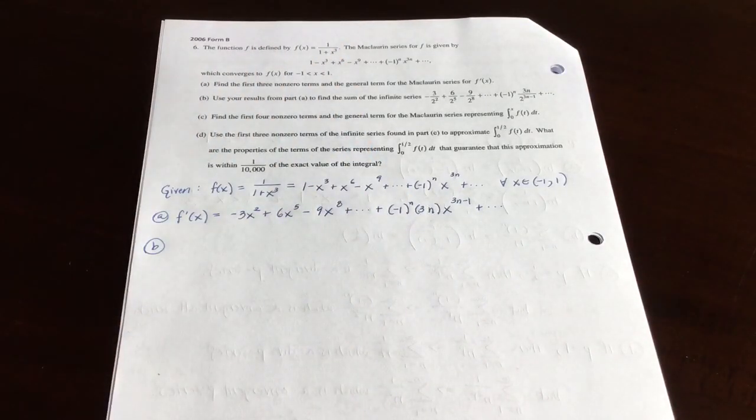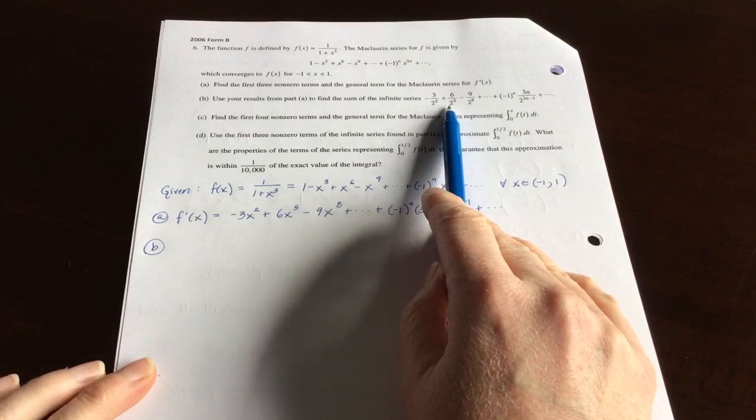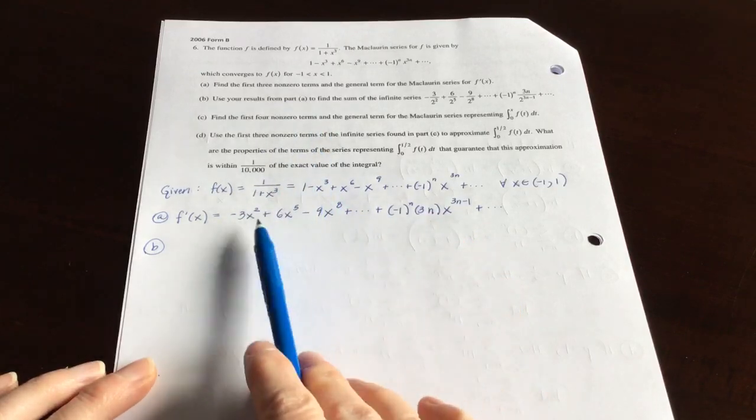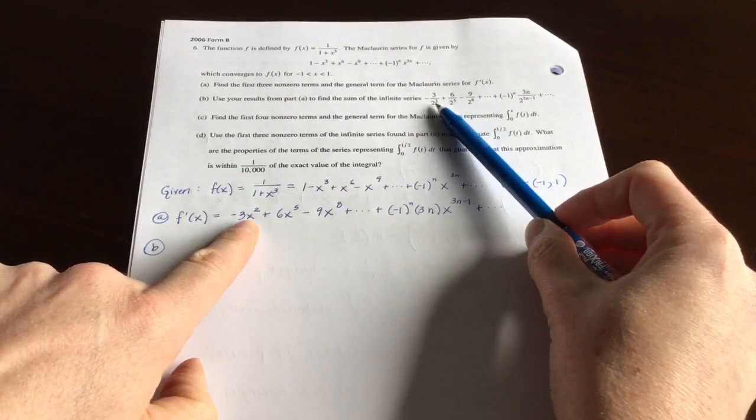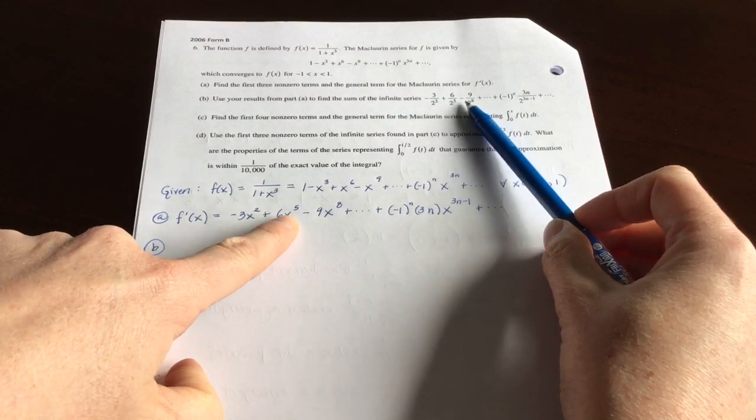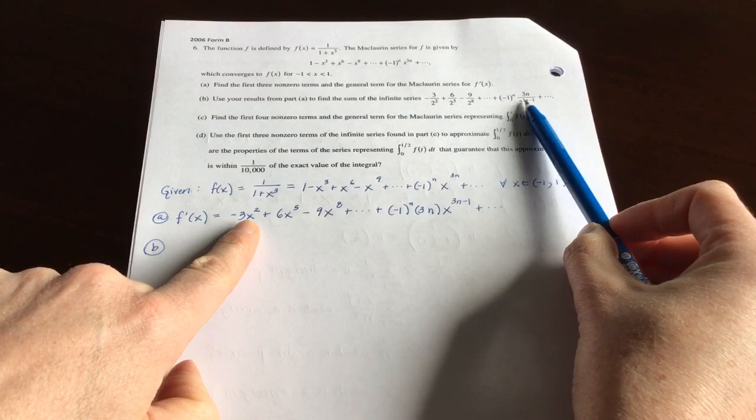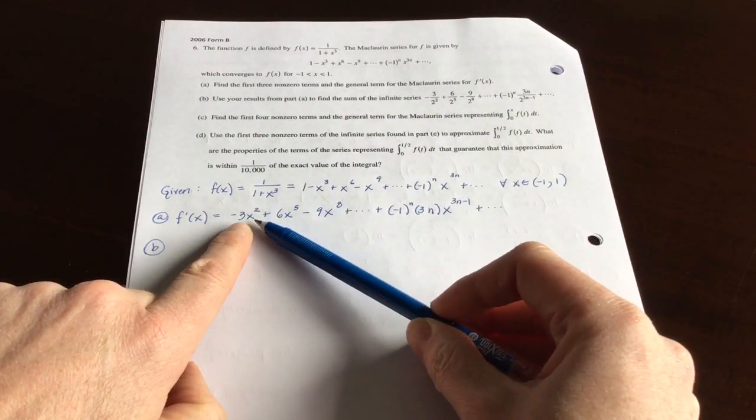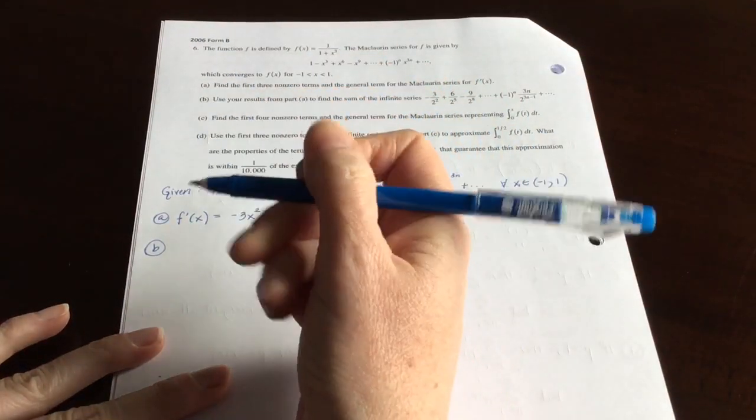Part B. Use results from part A to find the sum of the infinite series, negative 3 over 2 squared plus 6 over 2 to the 5th, etc. Now if you look at, they said use results from part A, so let's look at part A, and let's compare part A term by term to this expression. And really, what's the relationship between this expression that they gave us here and part A?